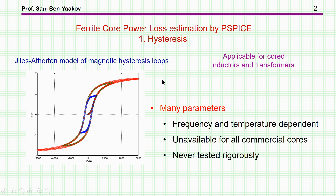One way to estimate the ferrite core loss is by reconstructing the history of the hysteresis loop. The area of this loop is proportional to energy, and then times frequency is actually the power consumed.